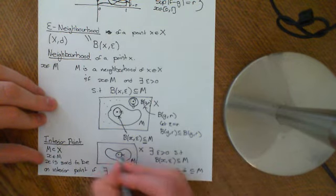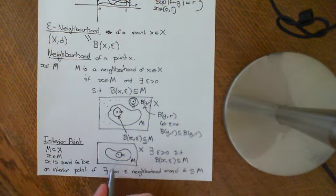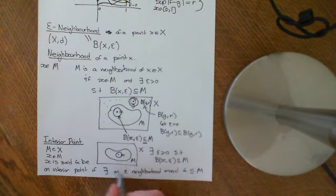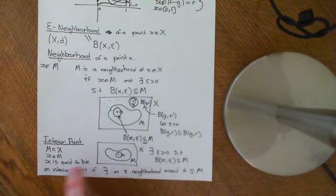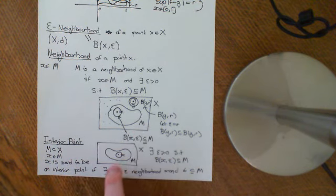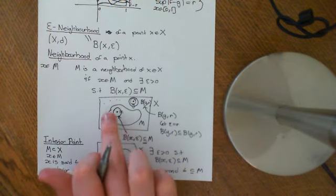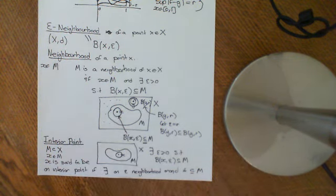So x is an interior point if you can put an open ball of some radius around the point X which is completely contained within the set M. These two definitions — neighbourhood and interior point — are completely analogous, just told from different points of view. If big M is a neighbourhood of a point X, then little X is an interior point of big M.